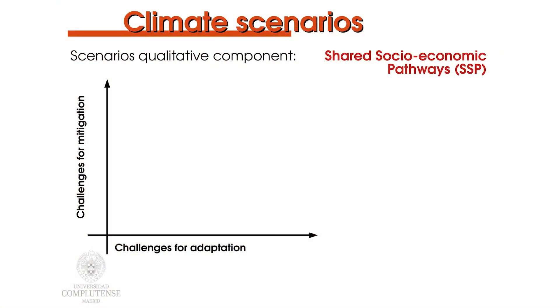The qualitative components are the narratives or storylines that describe the evolutions of aspects of society that provide the logic of the scenarios but which are difficult to quantify. They describe issues such as the quality of institutions, the political stability, or the environmental awareness. The narratives of these five scenarios span a range of possible futures in terms of challenges they imply for both mitigation and adaptation to climate change.